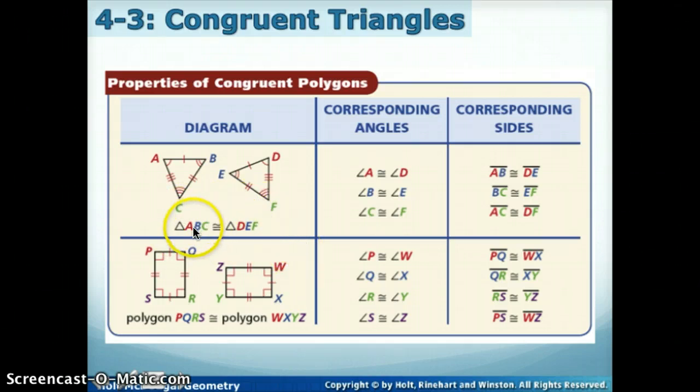So this will make our congruent statements very easy to use. The first two letters are congruent, so angle A is congruent to angle D. The second two letters as angles are congruent, so B is congruent to E, and C is congruent to F. You could do that from a picture, but now you see that you could do it just from the statement as well. Same with our letters: AB, first, second, is congruent to DE, first, second, and so on and so forth.